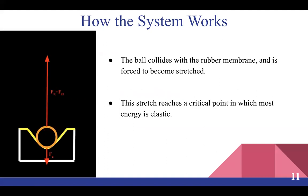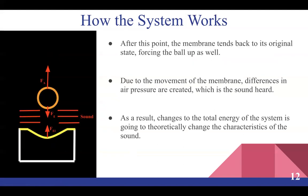The ball, still having kinetic energy, continues on its original trajectory and continues to collide with the rubber membrane, forcing the rubber membrane itself to become stretched and to bend from its original state, which can be seen in the diagram to the left. This stretch reaches a critical point at which most energy is elastic. This elastic energy is then used as a form of potential energy to cause kinetic energy of the membrane and the ball, forcing the ball up. It is due to this movement of the membrane that differences in air pressure are created, which is the sound that can be heard.